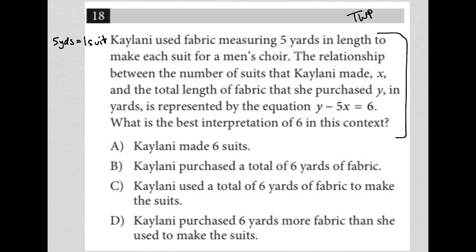The relationship between the number of suits that Kehlani made, x, and the total length of fabric that she purchased, y, in yards, is represented by the equation y minus five x equals six. So I'll write that down, y minus five x equals six. Again, where x is the number of suits that Kehlani made. I'm just underlining that. Number of suits made is x. The total length is y.